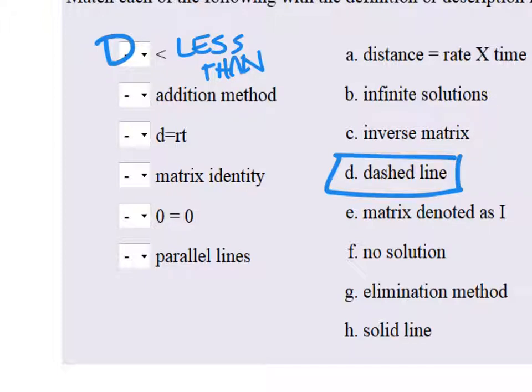Let's look at the rest of these. The addition method. The addition method is a method that we use to solve systems. So, distance equals rate times time doesn't make any sense. Nor does infinite solutions. That would be the solution to a system. Inverse matrix. A matrix, yeah, that works, but we're not really looking at an inverse of a matrix. Or any type of matrix. So, E doesn't work either. Or no solution. It's not a solid line. It's just that it's the elimination method. I don't know why they call it the addition method. Because sometimes we could subtract the two, but whatever. G.